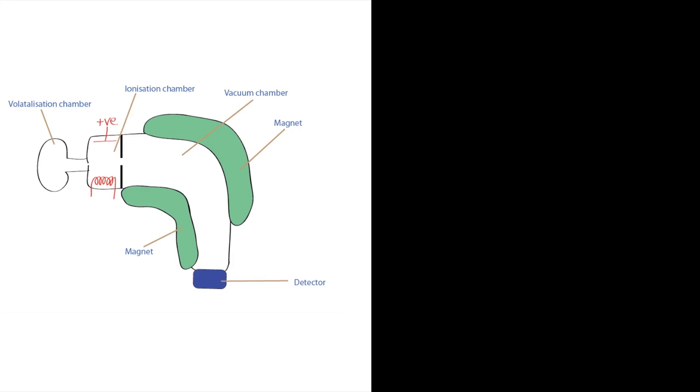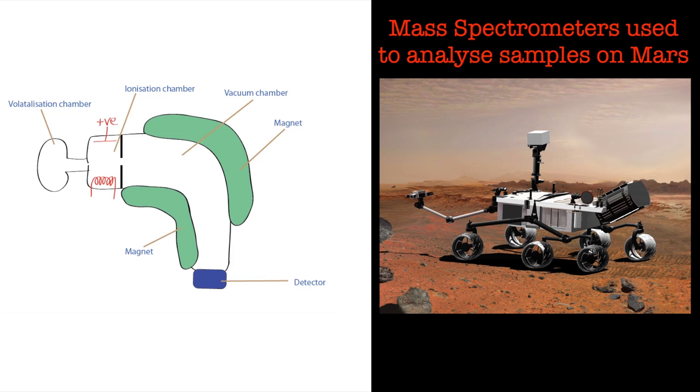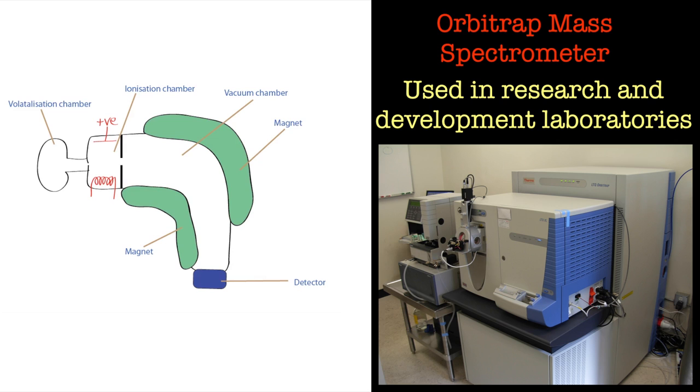Mass spectrometers are extremely sensitive and extremely useful, and that's why they've been used in space exploration and are still used today in research laboratories and things like that. An incredibly powerful technique for structural elucidation. And like I said, they're very sensitive, so you only need tiny amounts of compounds to be able to pick up a signal.